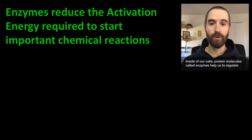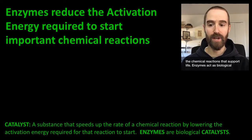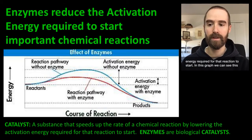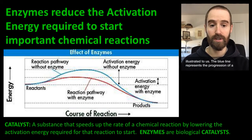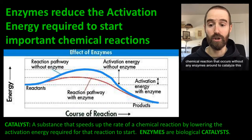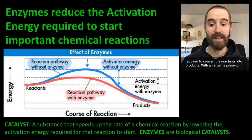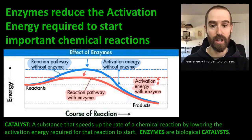Inside of our cells, protein molecules called enzymes help us to regulate the chemical reactions that support life. Enzymes act as biological catalysts, speeding up chemical reactions by lowering the activation energy required for that reaction to start. In this graph, we can see this illustrated: the blue line represents the progression of a chemical reaction that occurs without any enzymes around to catalyze it. With an enzyme present, this high point is much lower, meaning the reaction requires much less energy in order to progress.